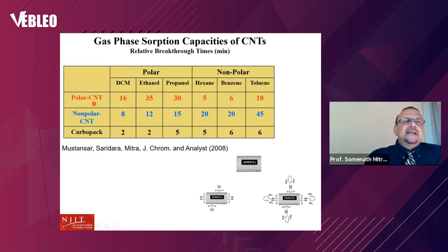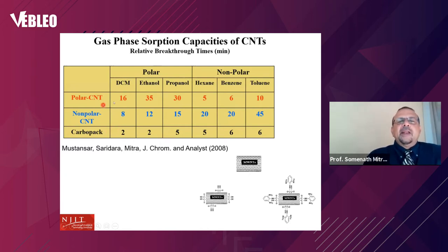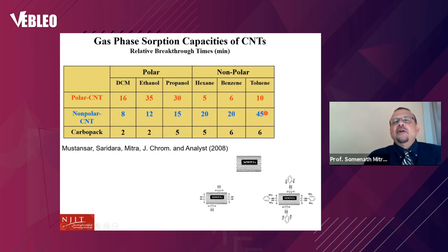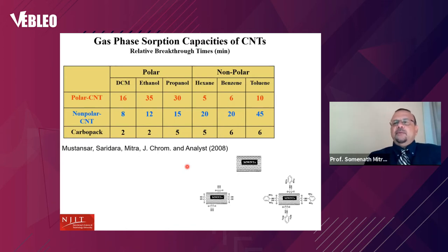Here's a good example: a non-polar carbon nanotube versus a polar functionalized nanotube. Looking at polar solutes like chloromethane, ethanol, and propanol, and non-polar ones like hexane, benzene, and toluene — on the polar nanotube, polar compounds show strong adsorption (values between 16–30) while non-polars are very low. On the non-polar nanotube, it's the opposite. By changing surface chemistry, we can selectively tune adsorption, which is critical for water purification.